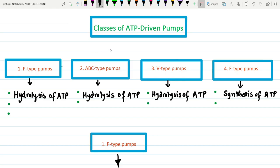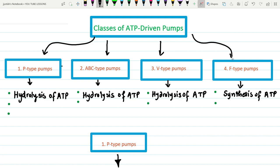Welcome to JK Lectures. Today we will study about the classes of ATP-driven pumps. There are four different types: the first one is P-type, the second is ABC type, the third is V-type, and the fourth and last one is F-type.